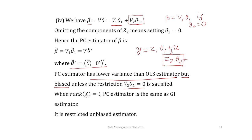When rank(X) = t, the principal component estimator is the same as the generalized inverse estimator — you can easily verify that the expressions are identical. Furthermore, the principal component estimator is a restricted unbiased estimator, meaning it is unbiased subject to the restriction V₂θ₂ = 0.